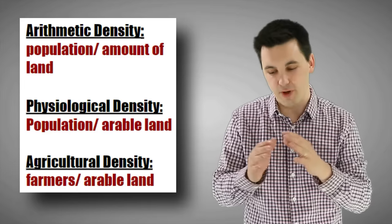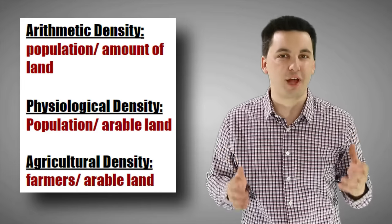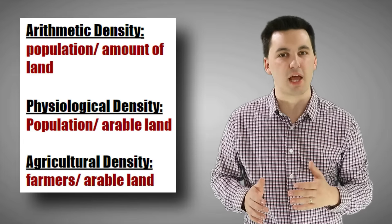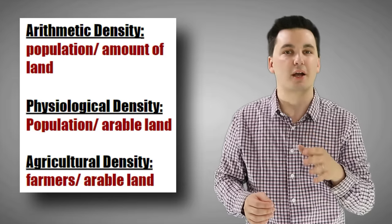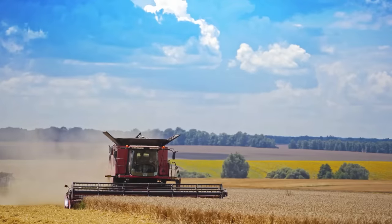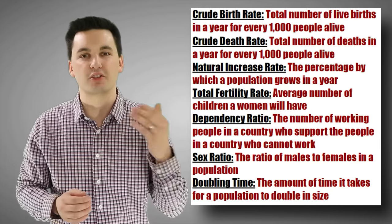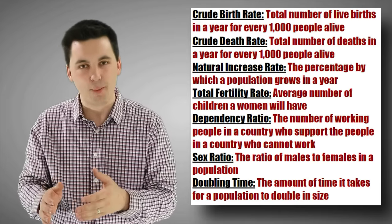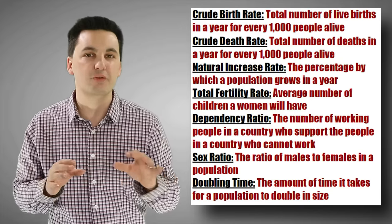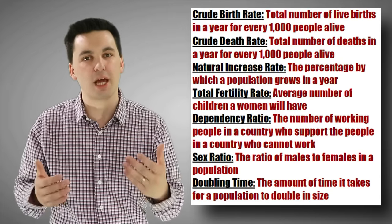When talking about distribution, remember population density. Arithmetic density looks at total population divided by total land. Physiological density looks at total population divided by arable land — showing how many people we need to feed. Agricultural density shows how many farmers we have divided by total arable land, telling us how efficient our food production is. Make sure you understand vocabulary like CBR, CDR, NIR, growth rate, sex ratios, doubling time, and dependency ratios — all showing different aspects of a society's population data.